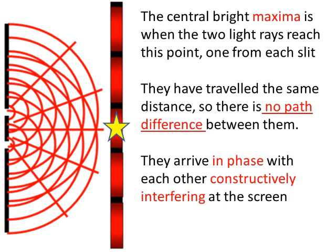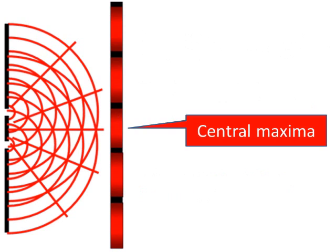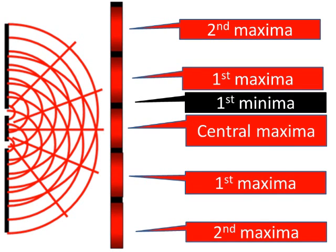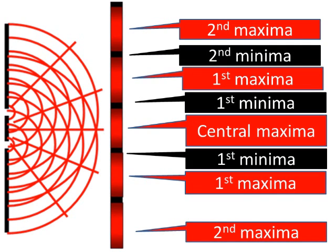So when the waves meet and they're in phase they can constructively interfere with each other which increases the amplitude of the waves. So the central bright maxima and then other maximas as we go out from the center and then in between we have minimas.